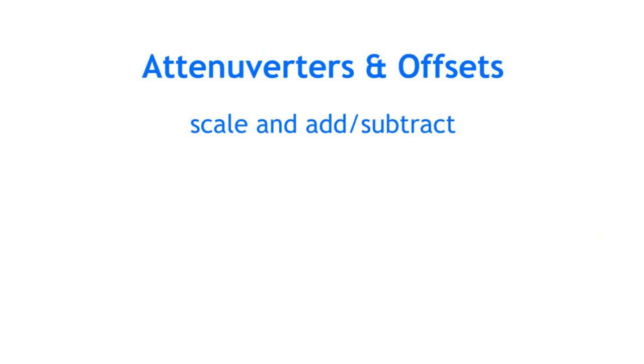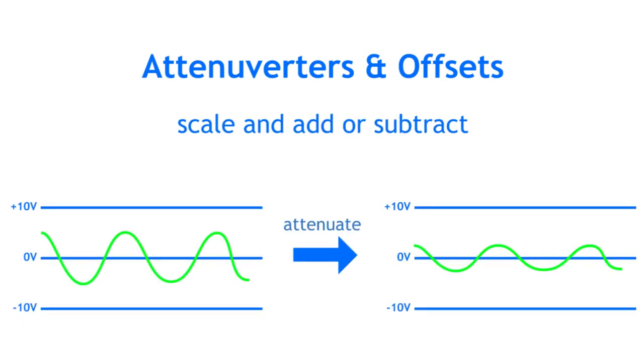Combining attenuators and offsets lets you do even more. If we take the example of the LFO, we could attenuate it first to swing from minus 2.5 to plus 2.5 volts, and then offset it by plus 5 volts to swing from plus 2.5 to plus 7.5 volts.